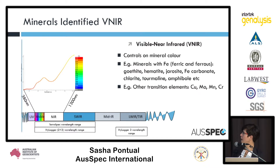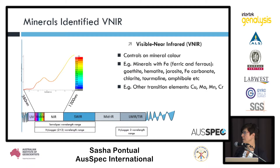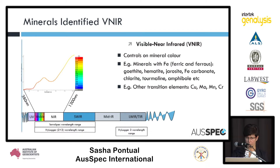The minerals we're identifying in the visible near-infrared — because we're looking at subatomic transitions — we're getting information on the transition elements. Iron dominates this part of the spectrum, so you get responses for the iron oxides: hematite and goethite, but also other minerals containing iron such as siderite, iron carbonate, chlorite, epidote, amphibole, and tourmaline all have responses in this part of the spectrum. In other cases we can also pick out responses associated with copper, molybdenum, manganese, and chromium if iron is not dominating this part of the spectrum. You can get quite a lot of information from this region.